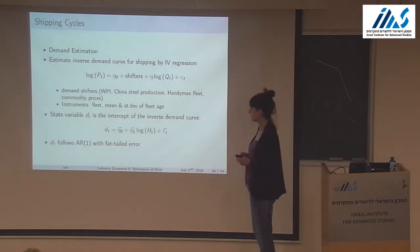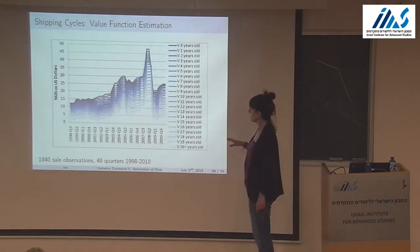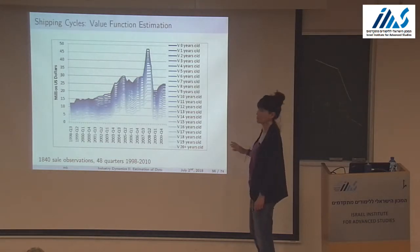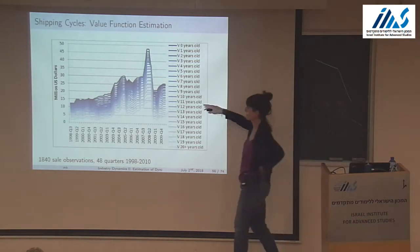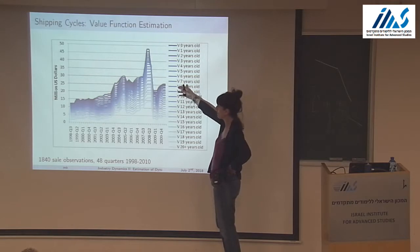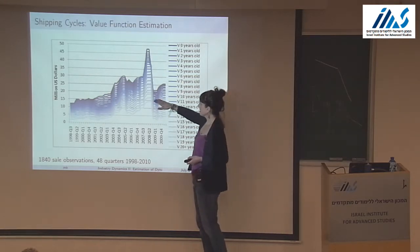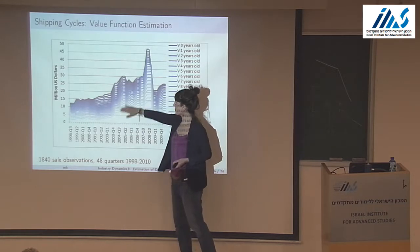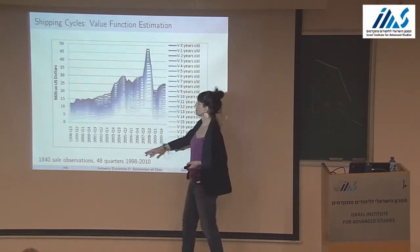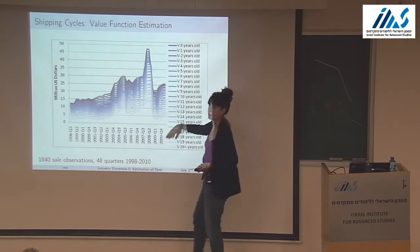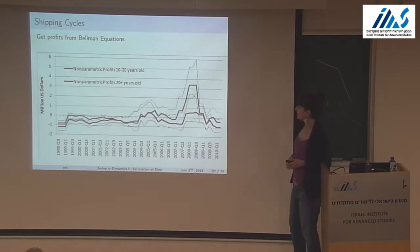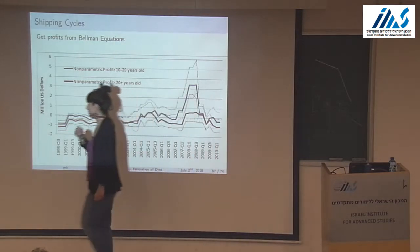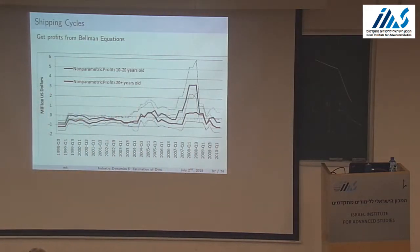These are the estimated value functions — basically average resale prices, fitted non-parametric regression y-hats. You can see that older ships have lower values than younger ships, which is not imposed. You also see the overall pattern of macro movement that we saw before.